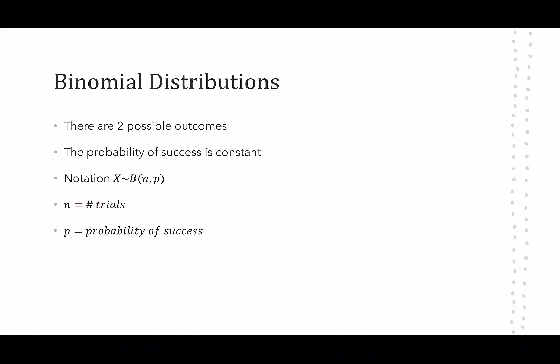So as a reminder, a binomial distribution happens when there are only two possible outcomes for our event. We think of each outcome as either being a success or not a success. The probability of success is constant, so no matter how many times we repeat this experiment, we would have the same probability each time. Our notation looks like X with a little squiggle, B(n,p). This tells us that our distribution follows a binomial distribution, that n is the number of trials we're going to do, and that p is the probability of success for each trial.